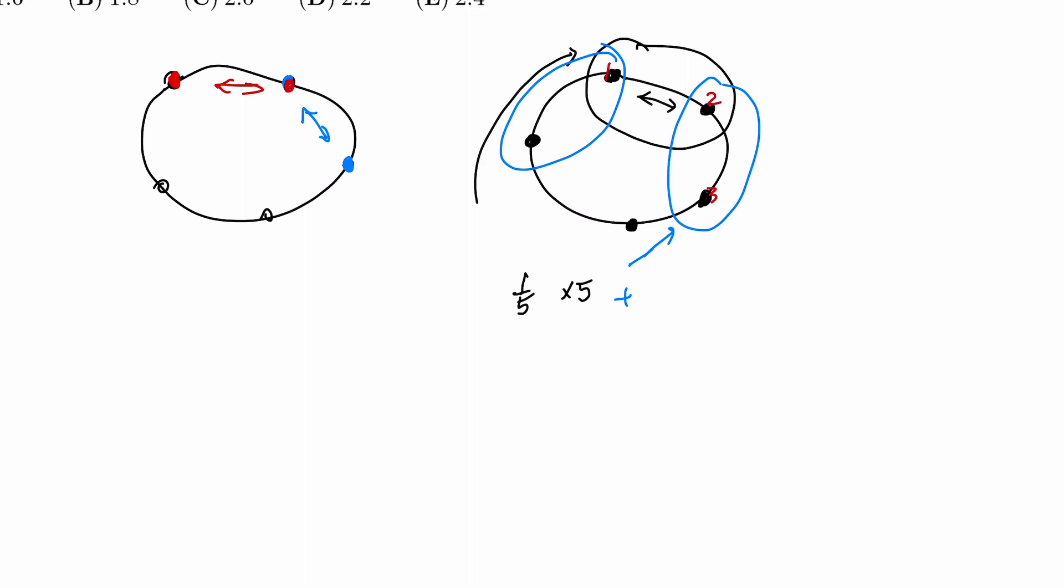So if we number them, one, two, three, four, five. After switching, we would get two, one, three, four, five.